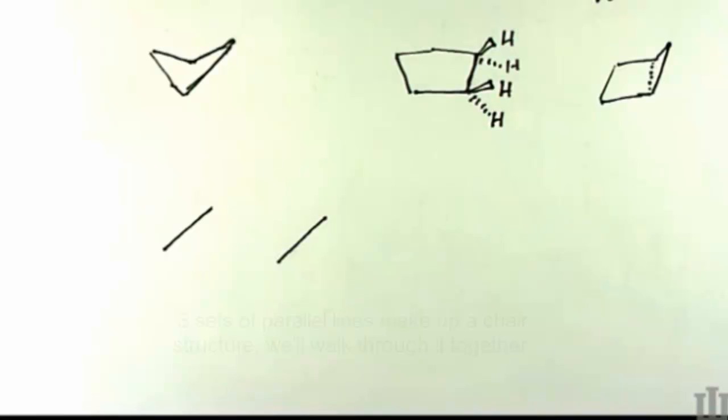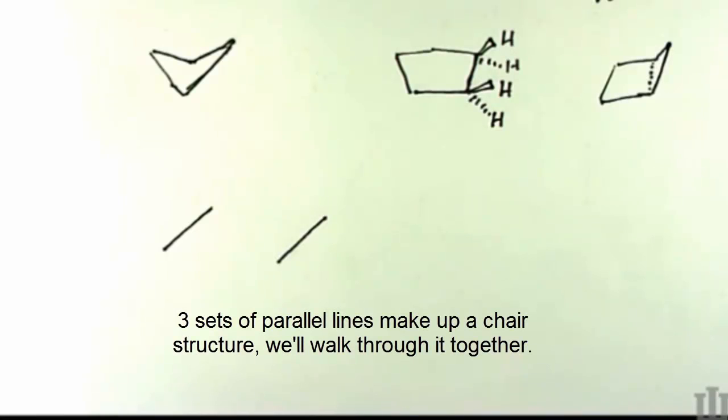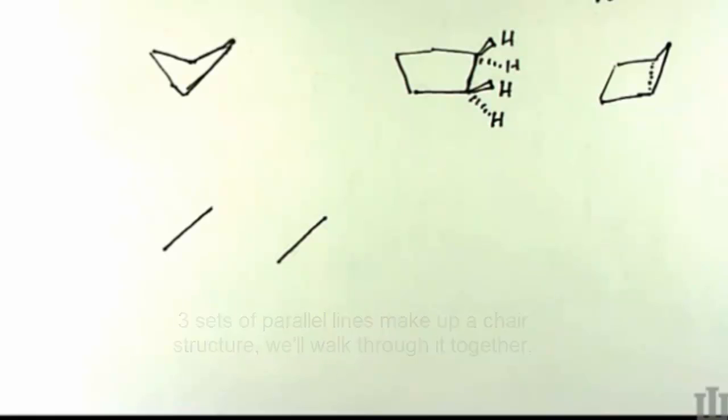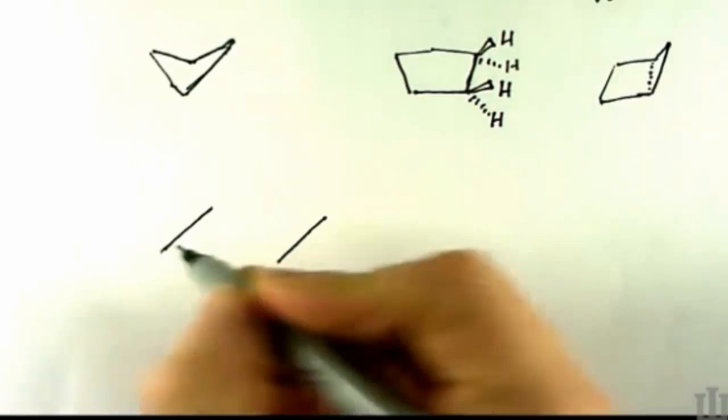You draw three sets of parallel lines. Those three sets of parallel lines are the bonds within the ring. And if you're drawing a chair, you can draw it in slightly different settings where the ends are tipped up or a little bit more level, but this would be a good place to start.